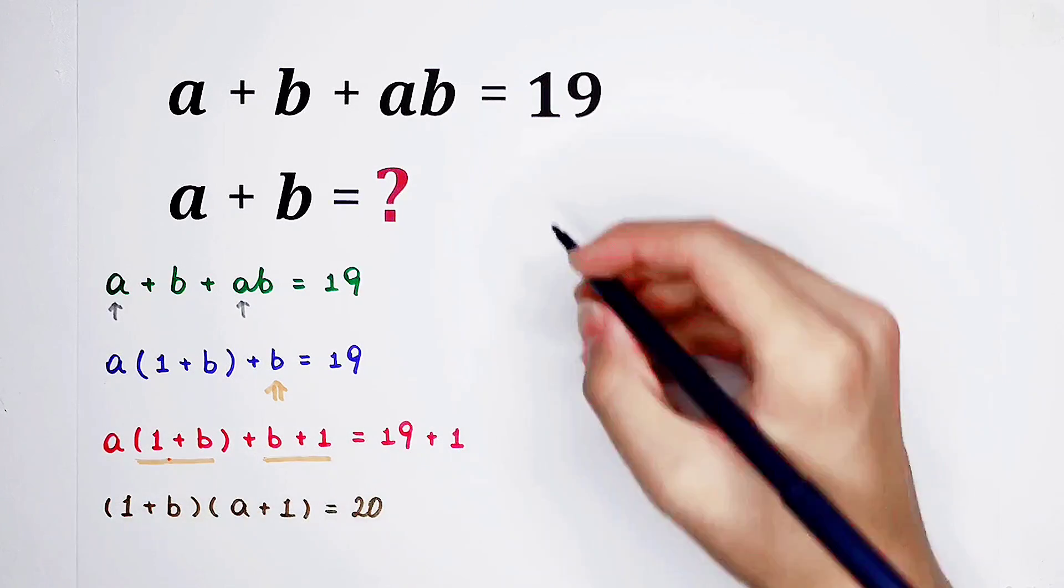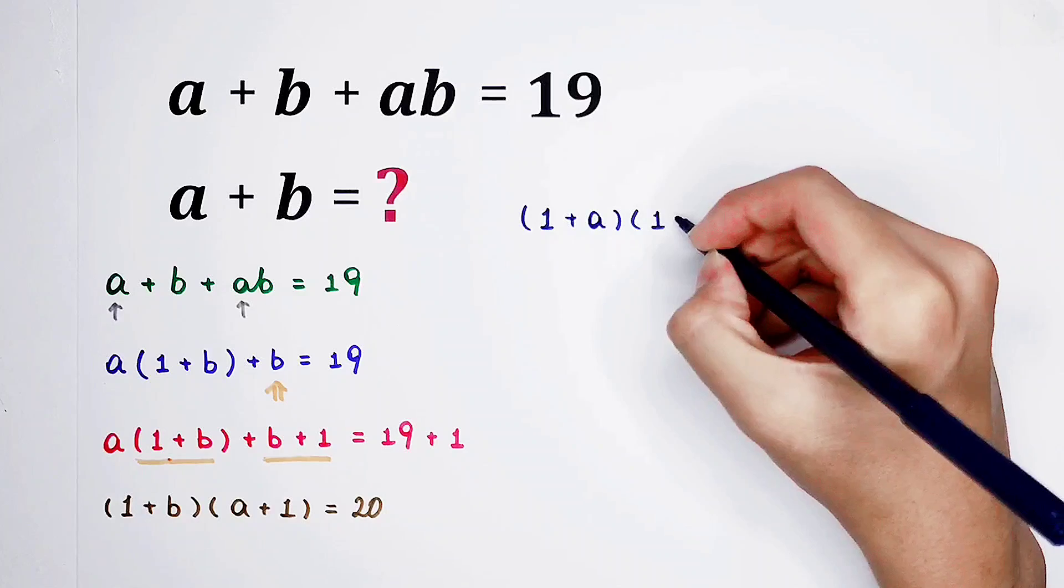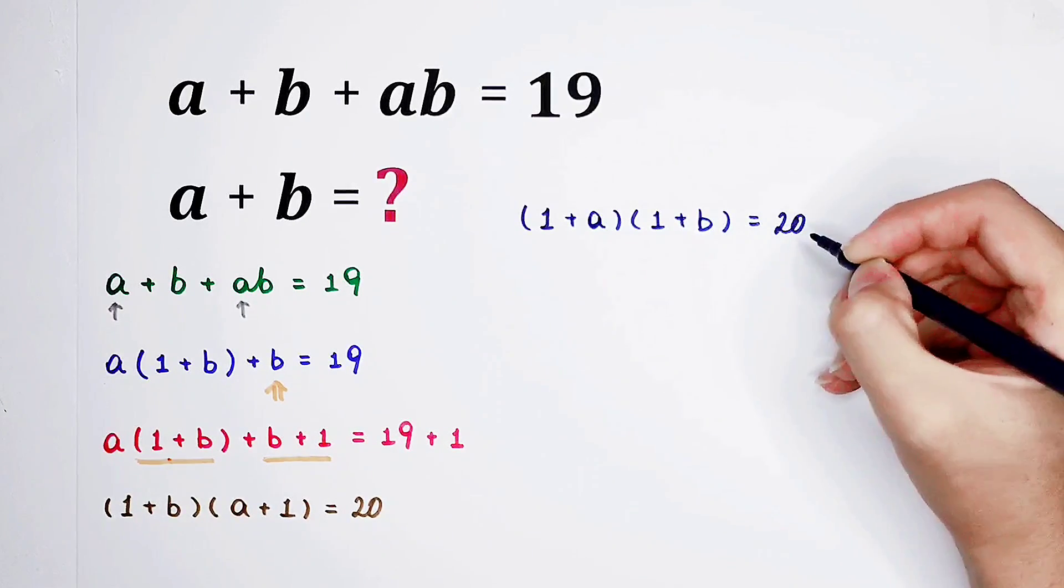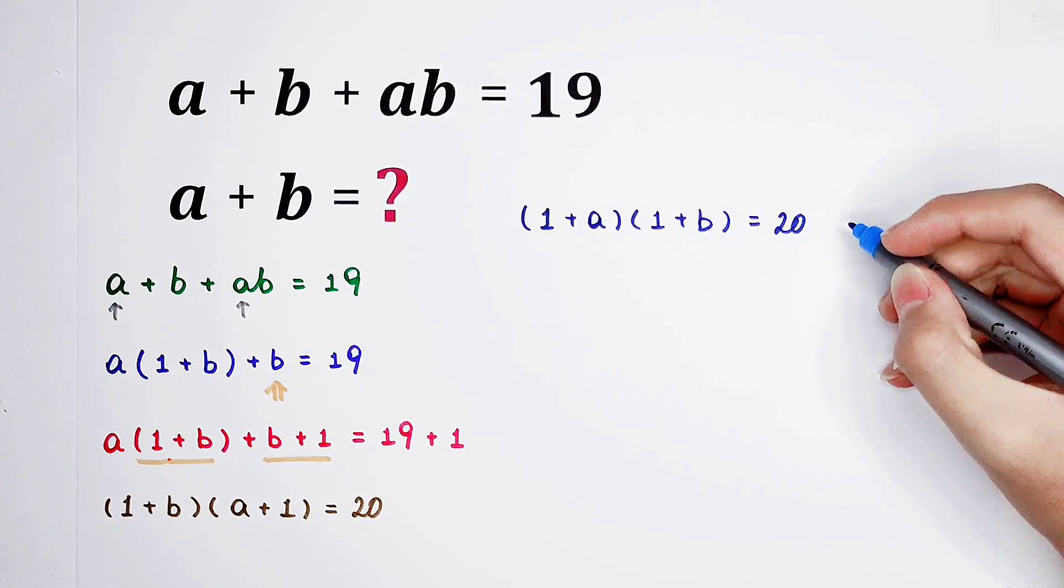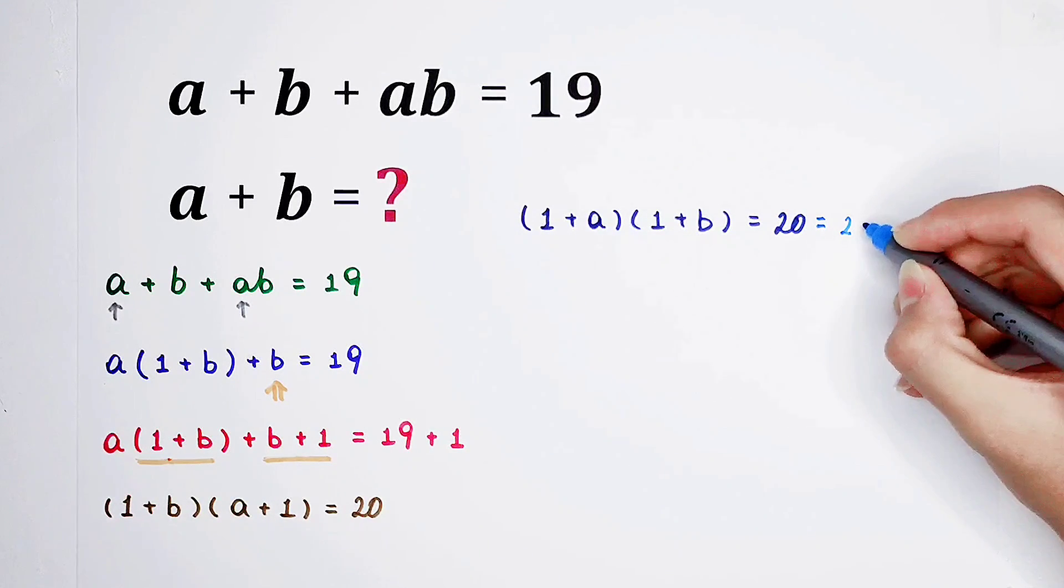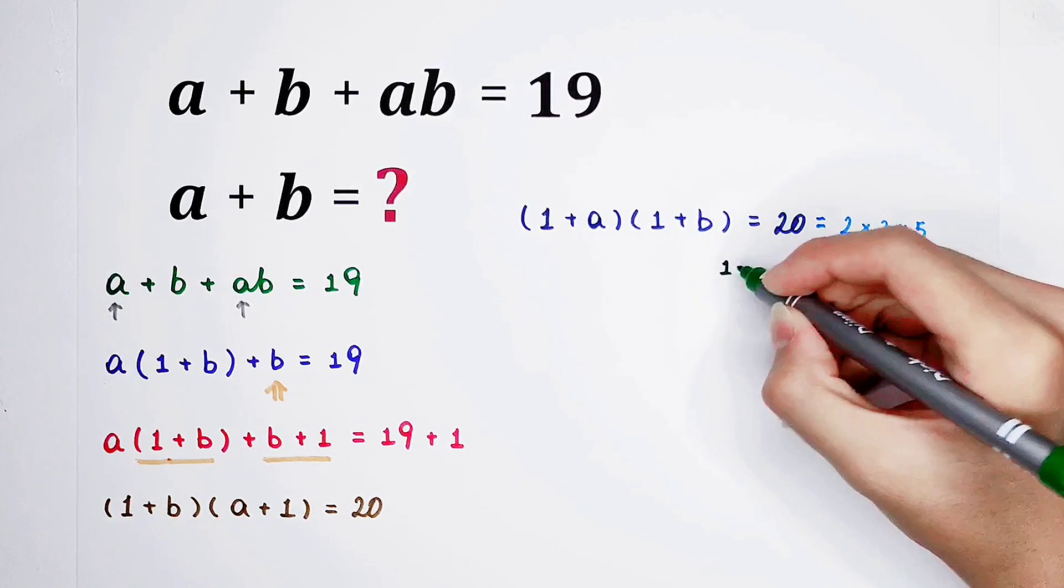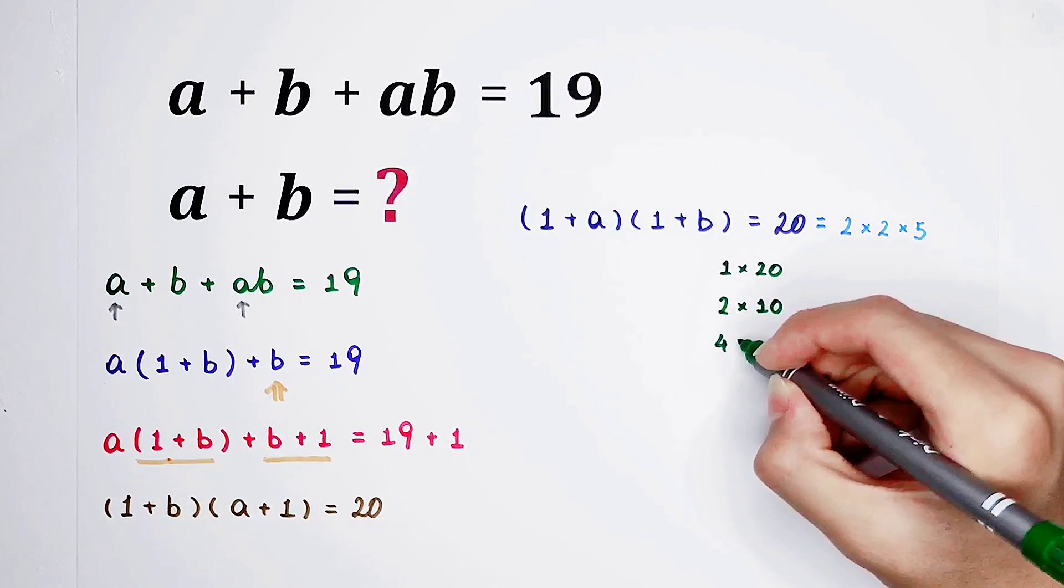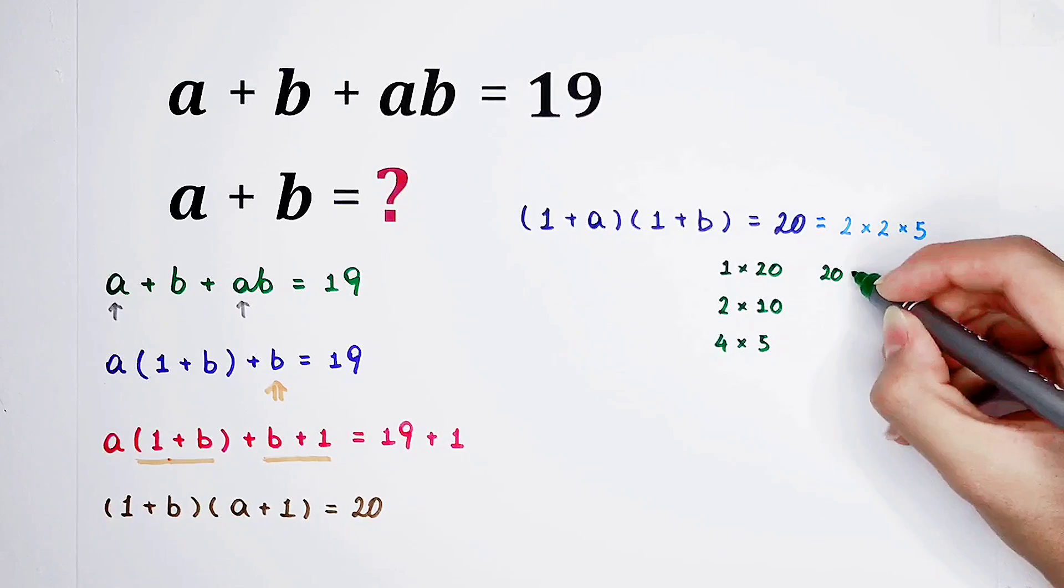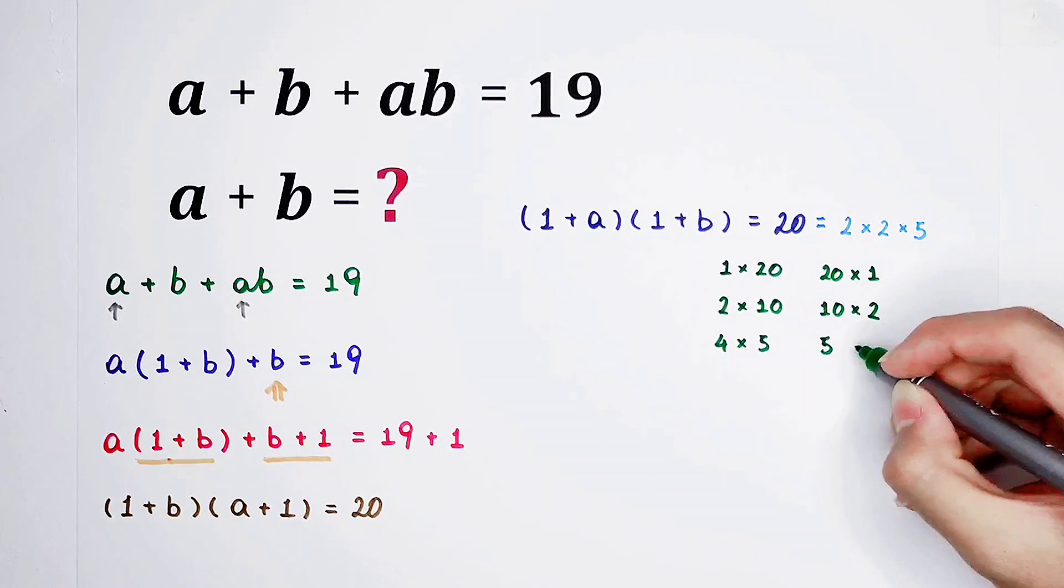So now the left side can be written as 1 plus A, then times 1 plus B. The right side is still 20. Now, our problem is, there's 20. How can we deal with it? 20 can be written as 2 times 2 times 5. So, how many possibilities are there? It can be written as 1 times 20, also 2 times 10, 4 times 5, 20 times 1, 10 times 2, and 5 times 4.